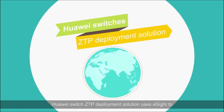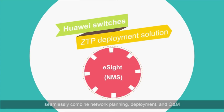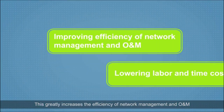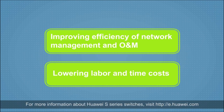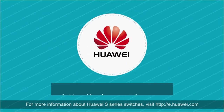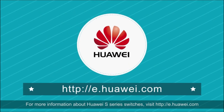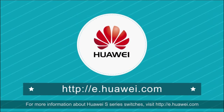Huawei Switch ZTP deployment solution uses eSight to seamlessly combine network planning, deployment, and O&M. This greatly increases the efficiency of network management and O&M, as well as decreases the labor costs and is highly time efficient. For more information about Huawei S-Series switches, visit http://e.huawei.com.